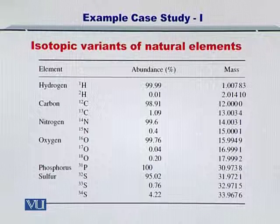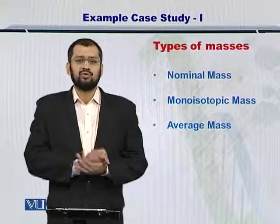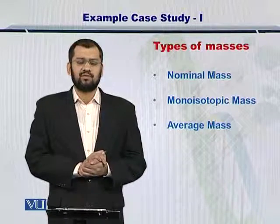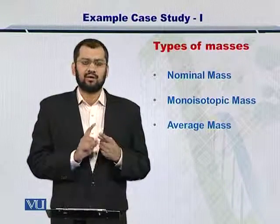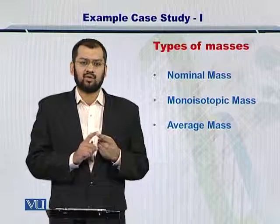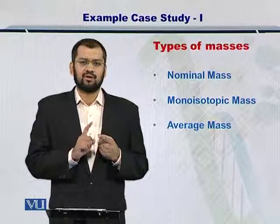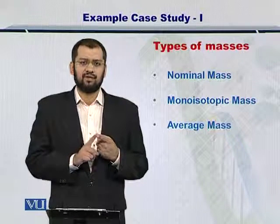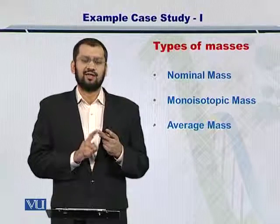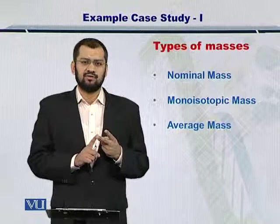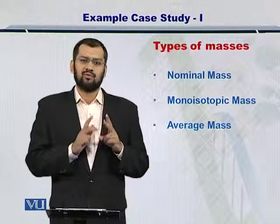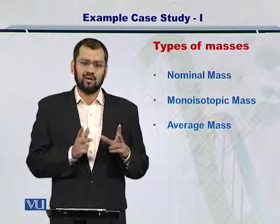So the two things you take from the previous table are: one, all elements that comprise a protein have multiple isotopes; and second, each of these isotopes occurs with varying abundance.